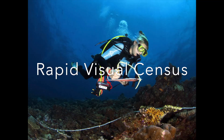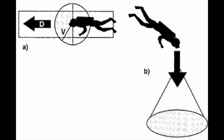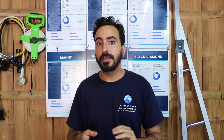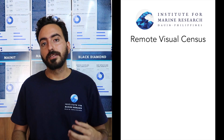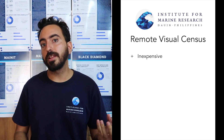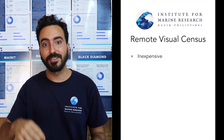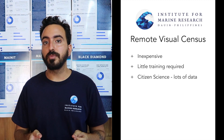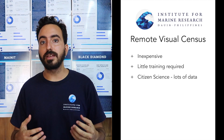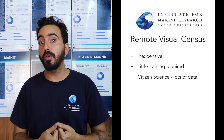The first method, and one of the most commonly used, is the Rapid Visual Census. This consists of either a transect of a set distance or standing still within a set radius in which you count fish. It's done using a slate and a pencil — you sit in one area or go along the transect and write down every fish you see. The pros are that it's cheap, requires no specialized equipment, training is easy to acquire, and it can really be done by anyone as citizen science.